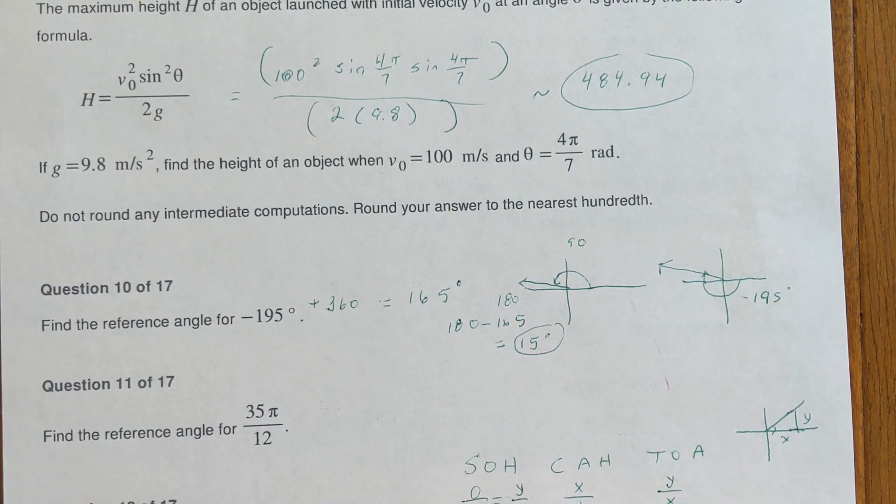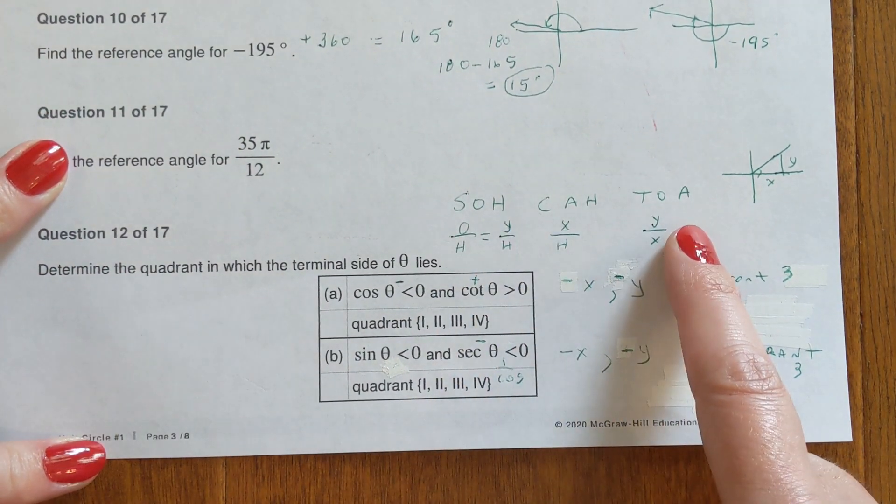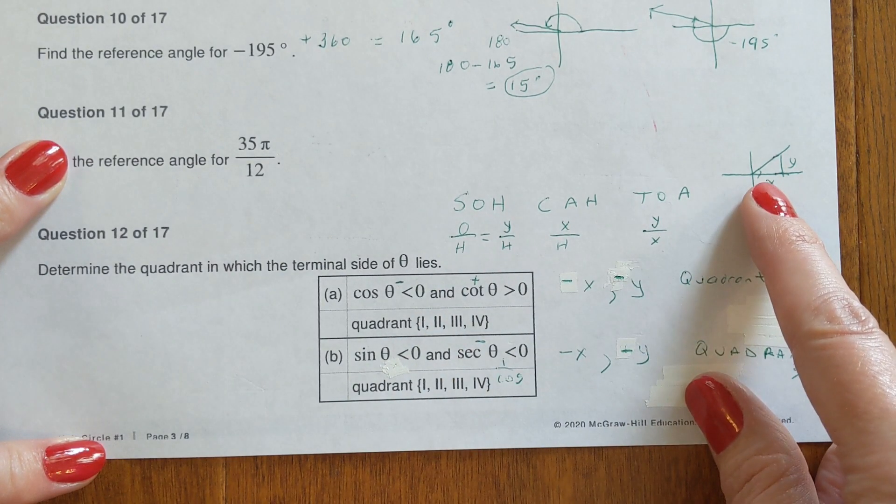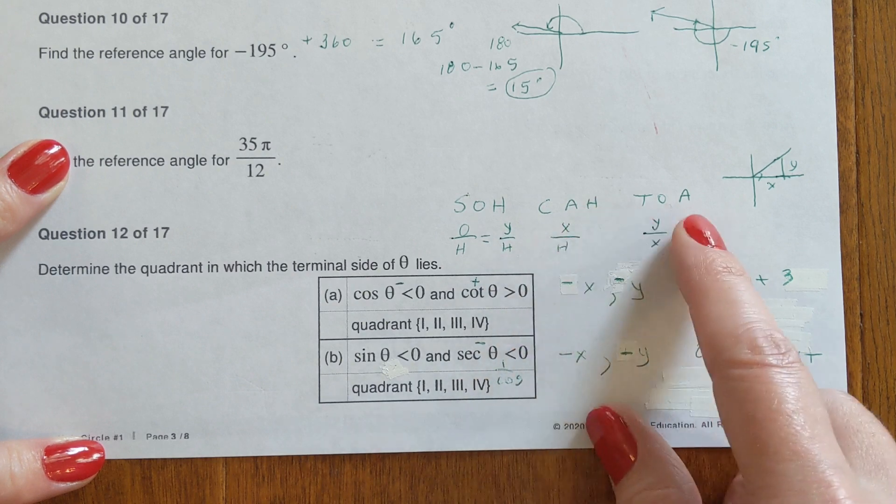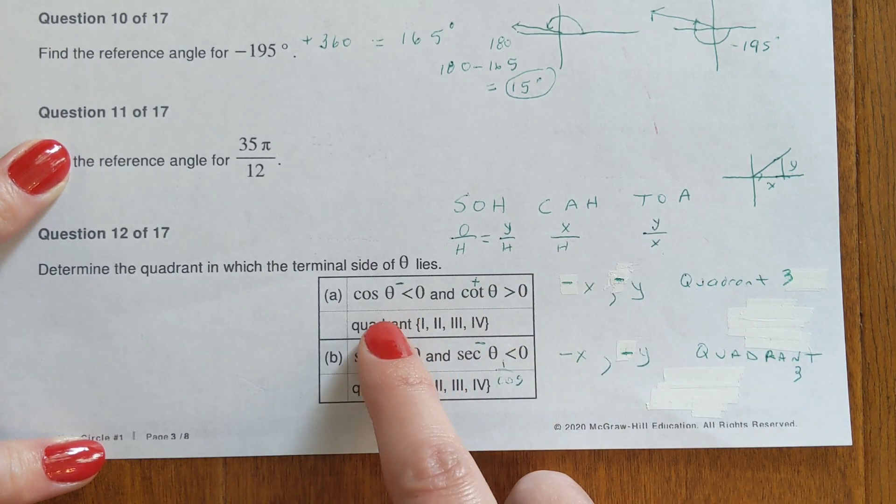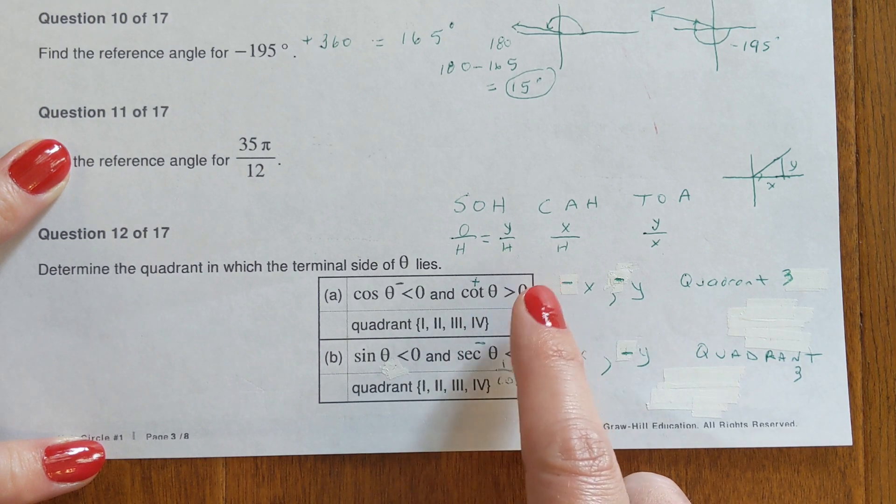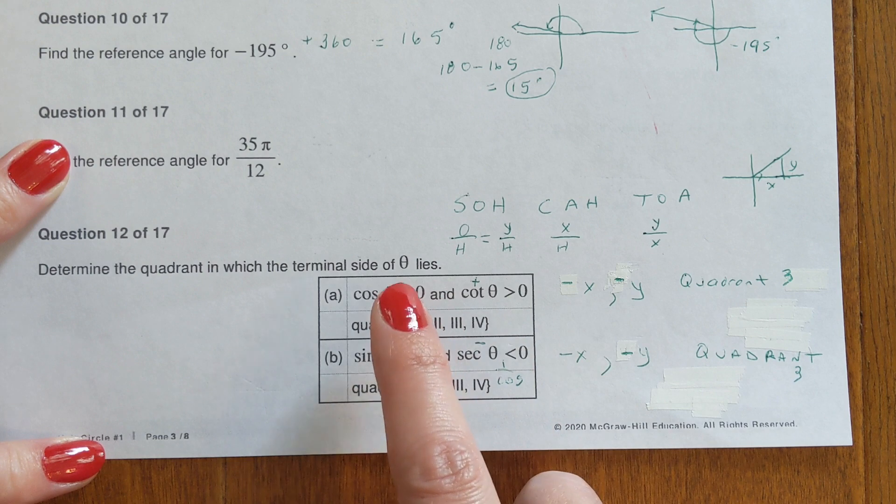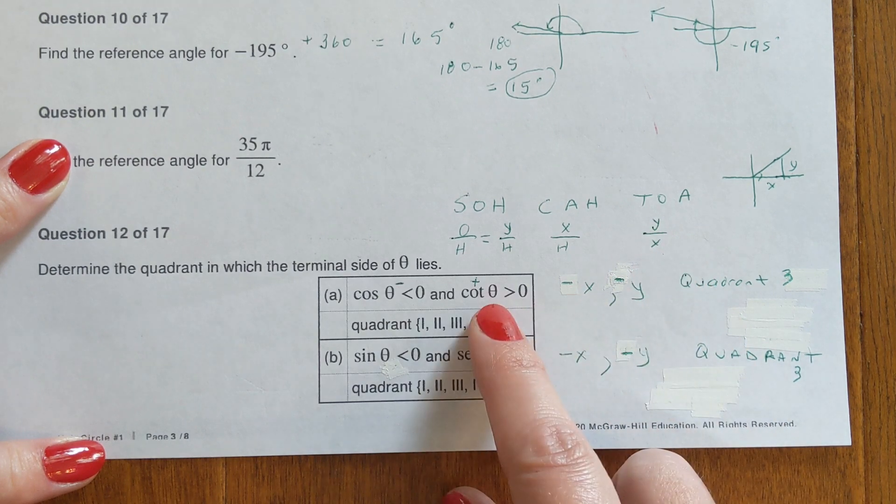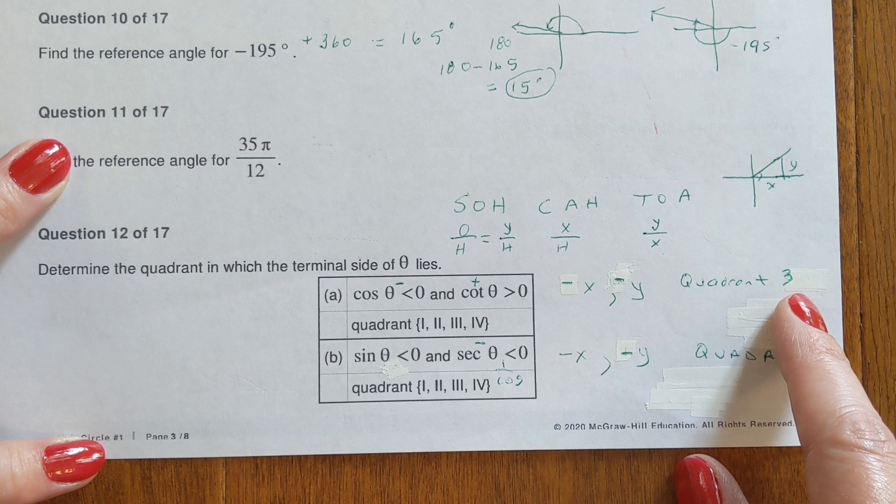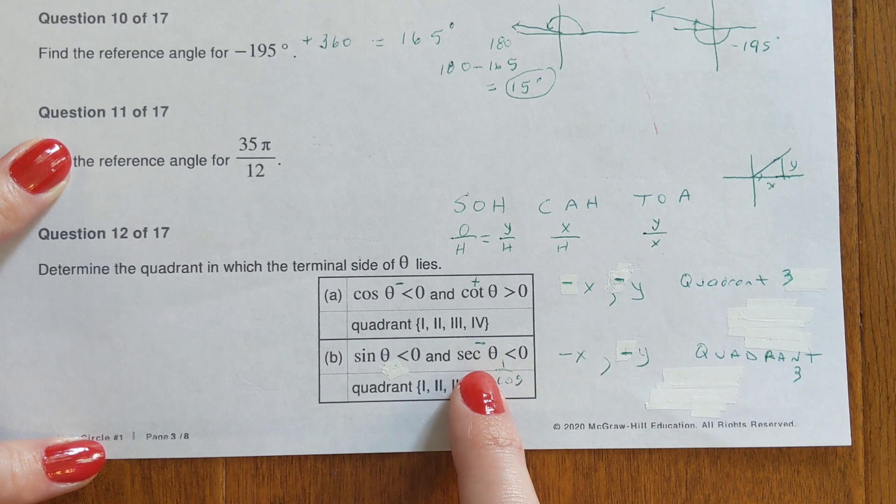Down here, number 12. Just a reminder, we got SOHCAHTOA. Sine is opposite over hypotenuse. Looking at the triangle here, the opposite side is y, the adjacent side is x. So tangent is y over x. When they're saying that the cosine, which is x, is less than zero, that means x is negative. It says cotangent is greater than zero. Well, for cotangent to be positive and we already said x is negative, we're going to need y to also be negative so that two negatives make a positive. That's why the y is also negative, which puts it in quadrant three. Down here, sine is negative so the y has to be negative. Secant, which is cosine, was also negative, so x is negative, y is negative - quadrant three again.